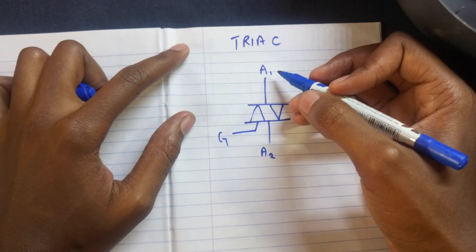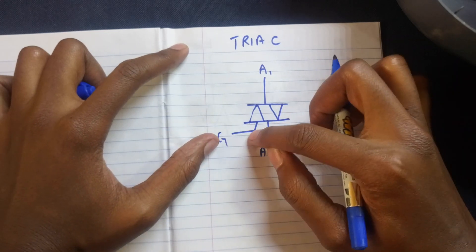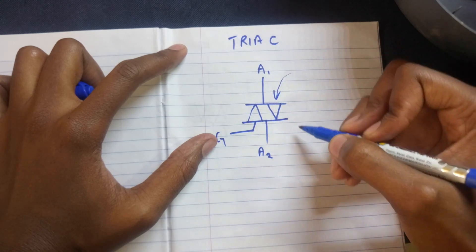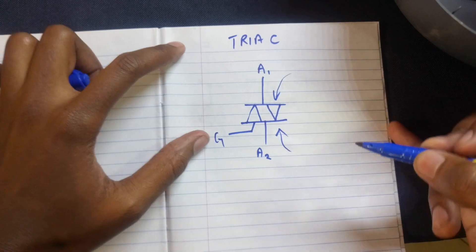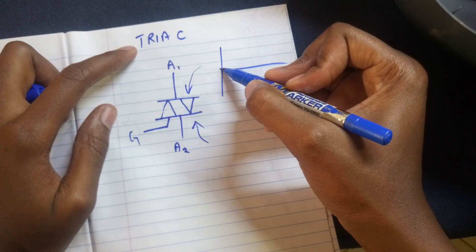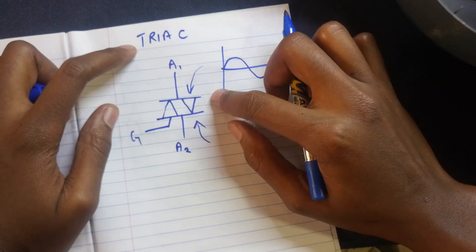Electricity can flow from A1 to A2, or alternatively it can flow from A2 to A1, but once it's triggered by a signal from the gate terminal. We know alternating current usually changes states. This is a simple waveform for alternating current, and this is very fine for a triac - it will actually conduct electricity either way.